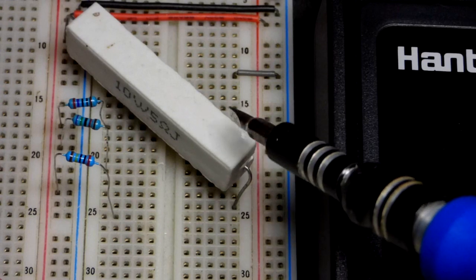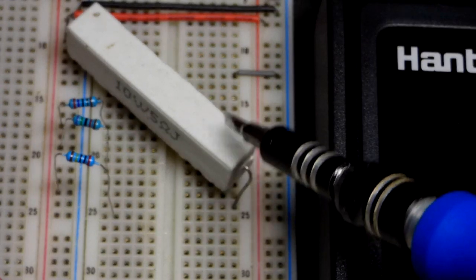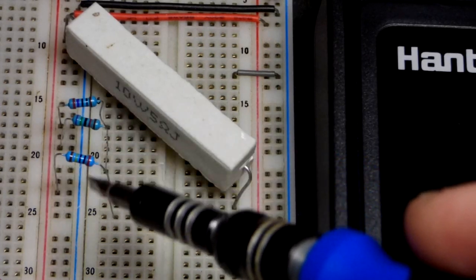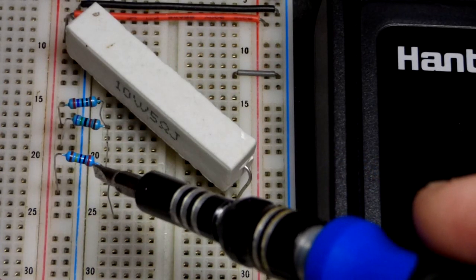So we can expect 1 amp of current for the concrete resistor here. So we need to make sure to set it to amps. Whereas these other resistors will be able to measure in milliamps.